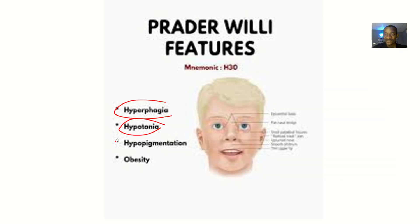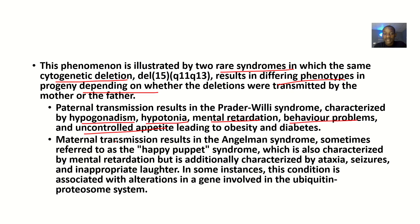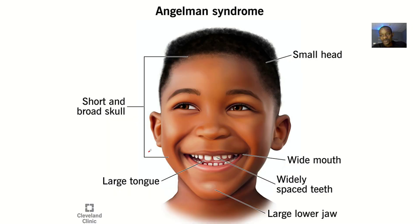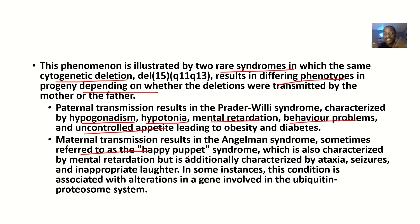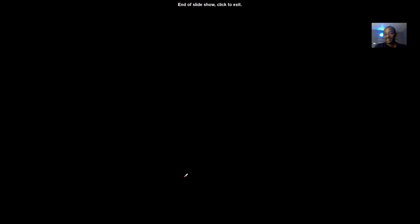If transmission is from the mother, that's where you have Angelman syndrome. It is sometimes referred to as the 'happy puppet' syndrome, meaning that the person will just always look happy. People with Angelman syndrome always look happy, and it is also characterized by mental retardation, ataxia, seizures, and inappropriate laughter — just happy for no reason. In some instances, this condition is associated with alterations in genes involved in the ubiquitin-proteasome system.